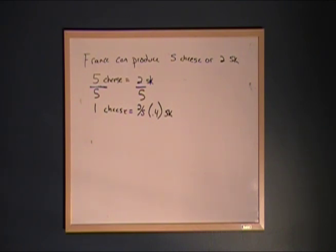We can do the exact same thing to find out what the opportunity cost of one tub of sauerkraut is. We know that two tubs of sauerkraut equal five wheels of cheese. If we want to solve for what one tub of sauerkraut is, we have to divide both sides of the equation by the number of sauerkraut that can be produced. We divide both sides by two, and what we come up with is one tub of sauerkraut equals five halves, or 2.5, wheels of cheese.